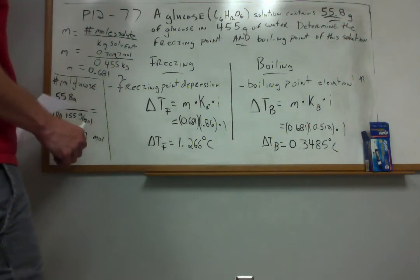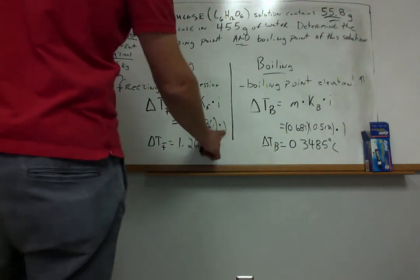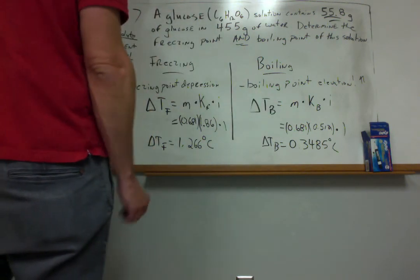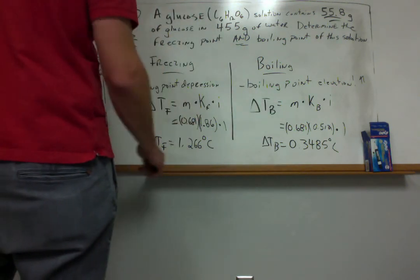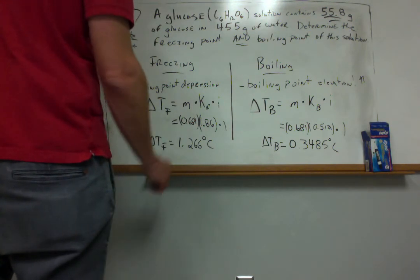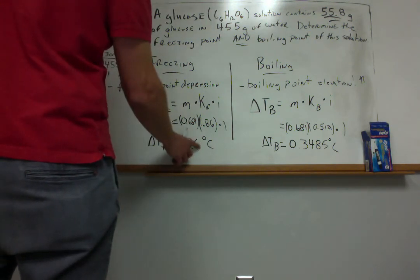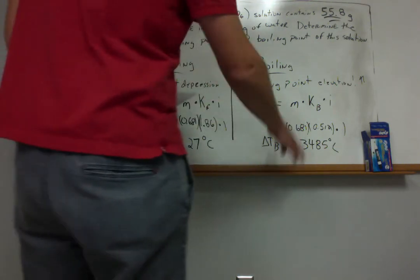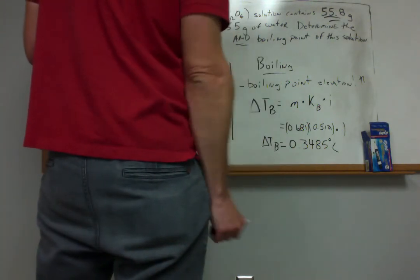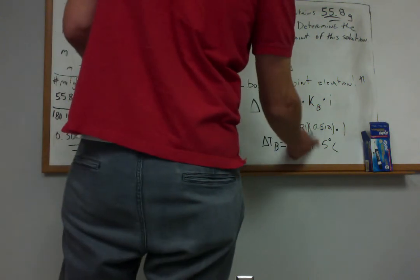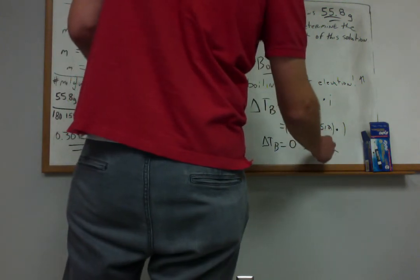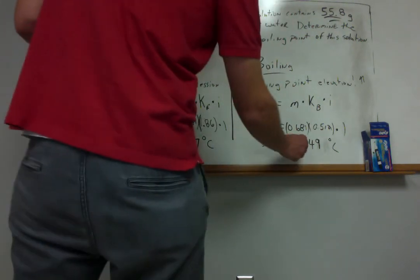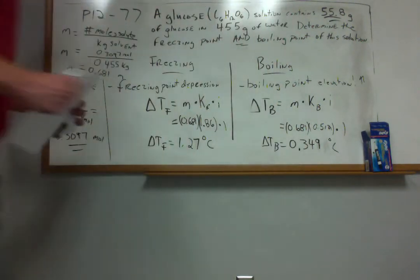Now, again, paying attention to sig figs. This is actually an exact number, so we're going to assume it has, you know, infinite sig figs. It's a counting number basically. But we've got 3 and 3, so I should probably truncate to 3. So it looks like maybe I'd want to round up to 1.27 here. And over here, again, 3 for both of these. So I'll round up again to 3, 4, 9. Ditch this 5. So those are my quantitative results.